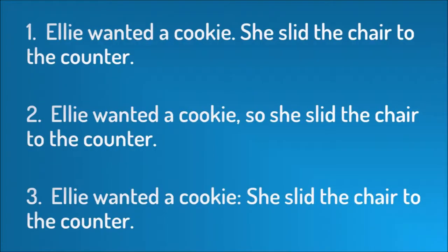One: Ellie wanted a cookie. She slid the chair to the counter. Two: Ellie wanted a cookie, so she slid the chair to the counter. Three: Ellie wanted a cookie; she slid the chair to the counter. Regardless of whether these sentences are two separate ones or combined using a conjunction like 'so,' a semicolon, or colon, they are still paratactic because the phrases are short and simple.